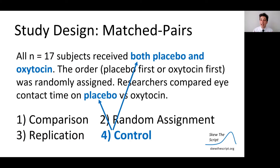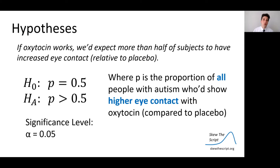Importantly, this study had control — you control for the placebo effect with a placebo group, and you control for confounding by having two treatment arms that are otherwise the same. If oxytocin works, we'd expect more than half the subjects to have increased eye contact relative to placebo. In other words, the proportion of patients on oxytocin with higher eye contact should be above 0.5, above a coin flip.